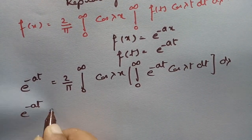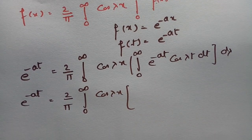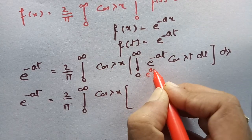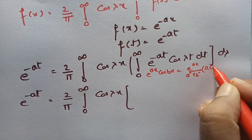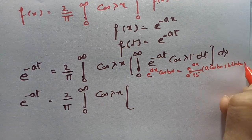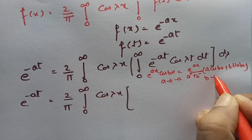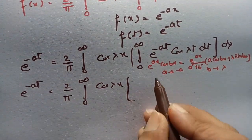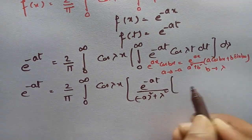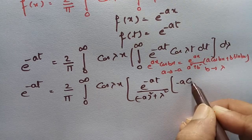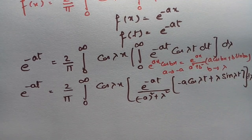Now substituting the value, e^(-at) equals (2/π) times the integral from 0 to infinity of cos(λx). We have a formula: the integral of e^(ax) cos(bx) can be written as e^(ax) / (a² + b²) times (a·cos(bx) + b·sin(bx)). In place of a we write −a and in place of b we write λ. Applying this formula: e^(−at)/(a² + λ²) times (−a·cos(λt) + λ·sin(λt)), into dλ.